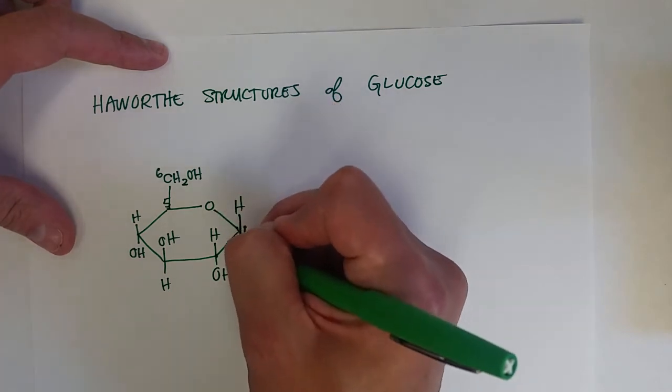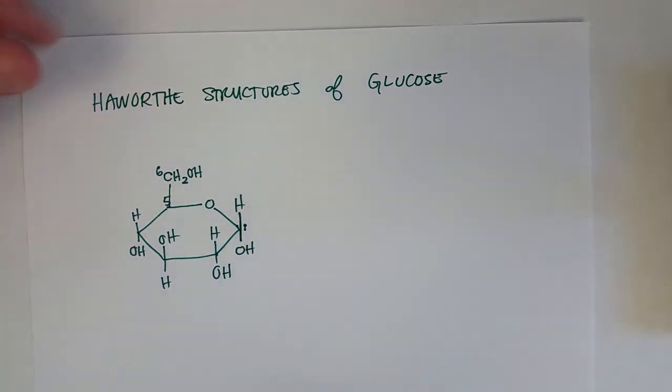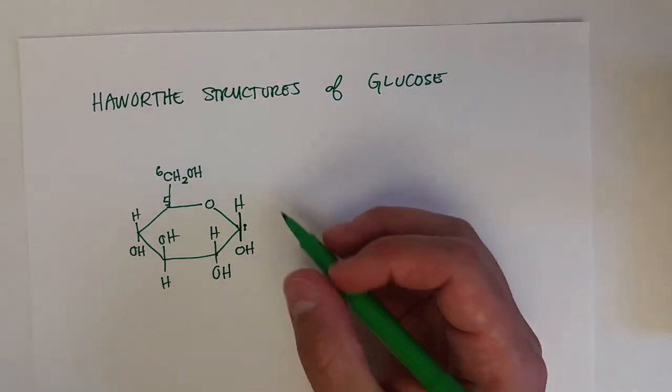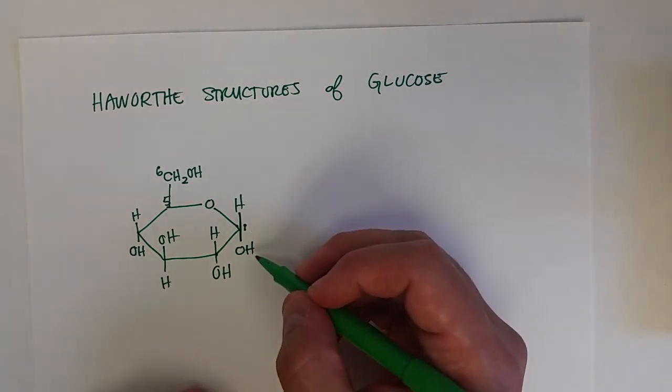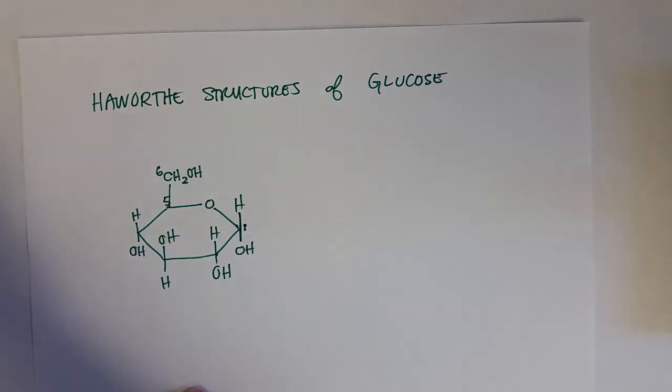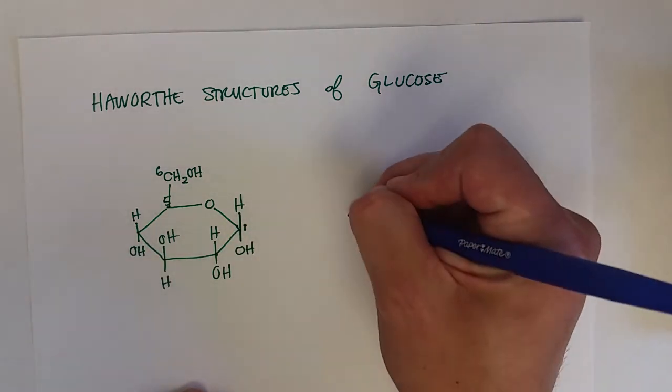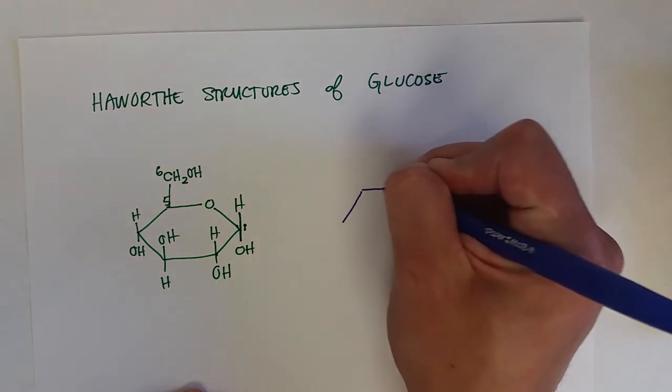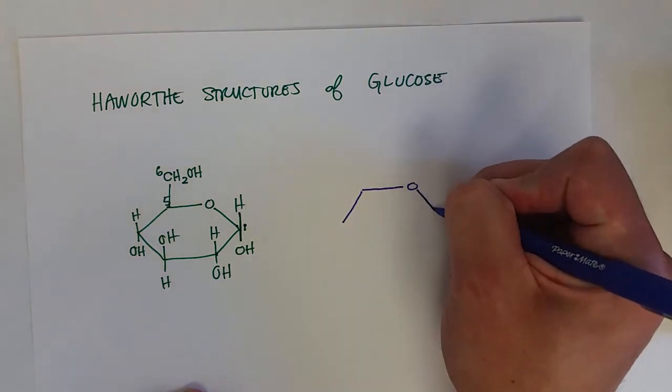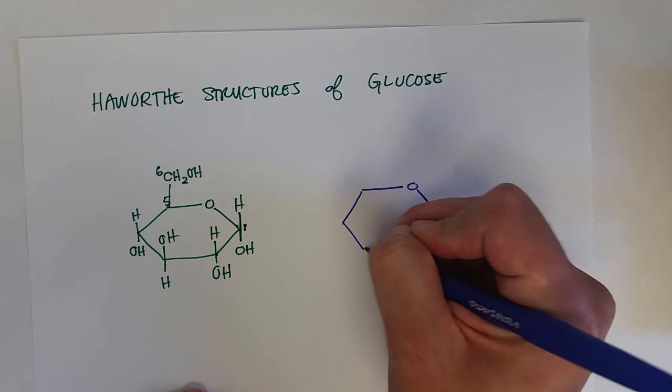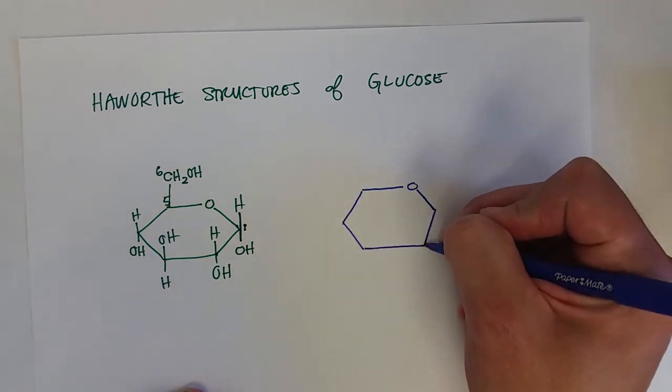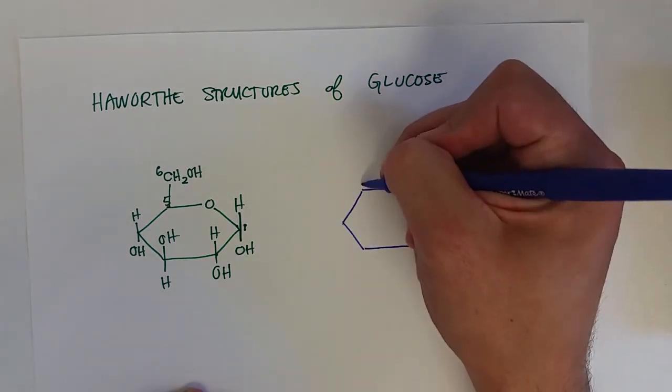Now on that number one carbon, the anomeric carbon, there are two very important configurations that we would want to think about. The hydroxyl group can either be down as I wrote it like this, or the other scenario is that the hydroxyl group can be up. Let's draw that structure and see what that would look like. Same things happening.